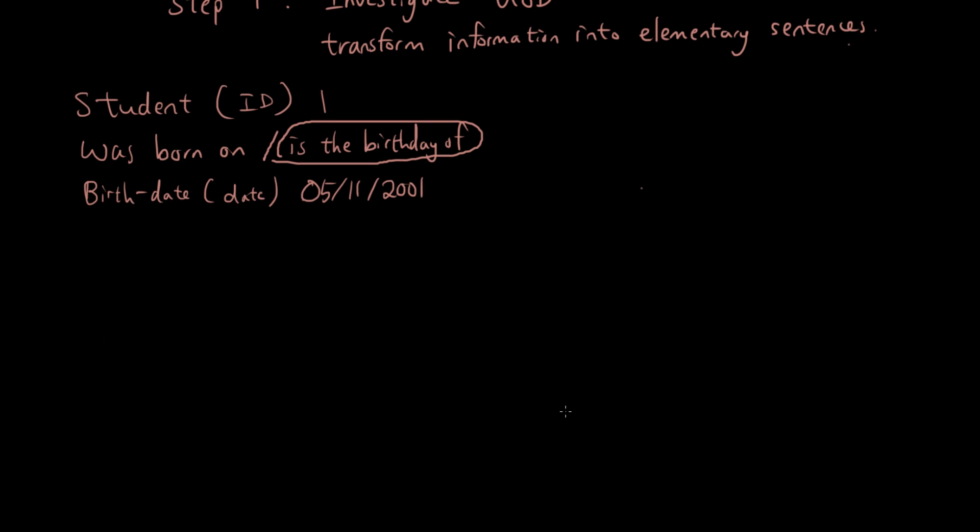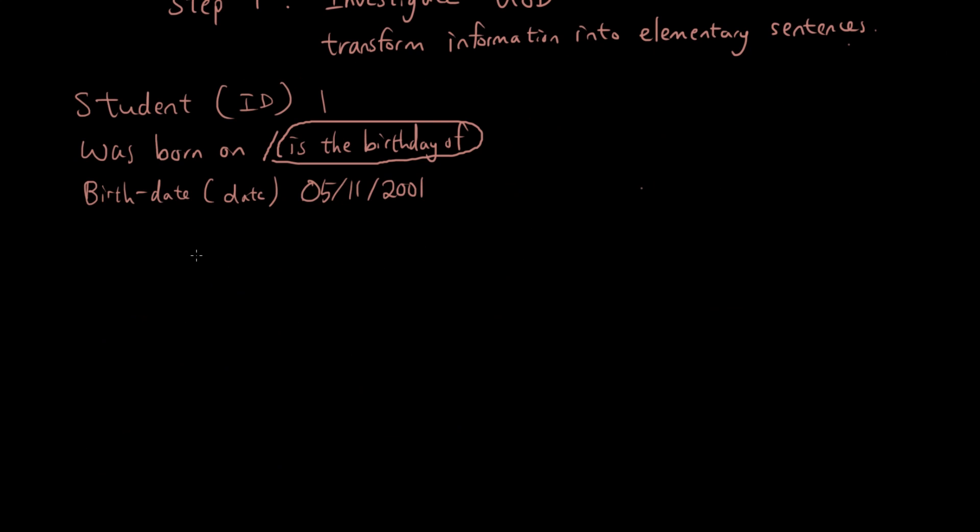I'm going to write two more just so you guys get the pattern. Here's another one: student with an ID of 1 lives at the house with the address 5 Moon Street. Reading backwards: house with the address 5 Moon Street is the home of student with an ID of 1.